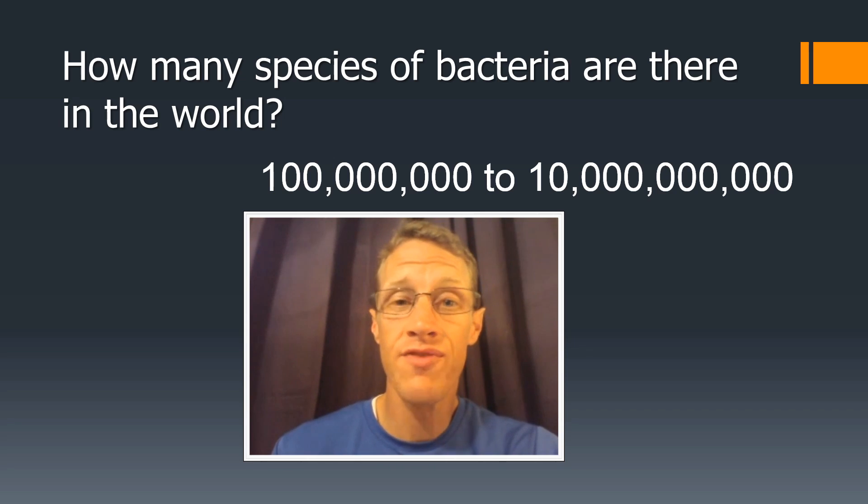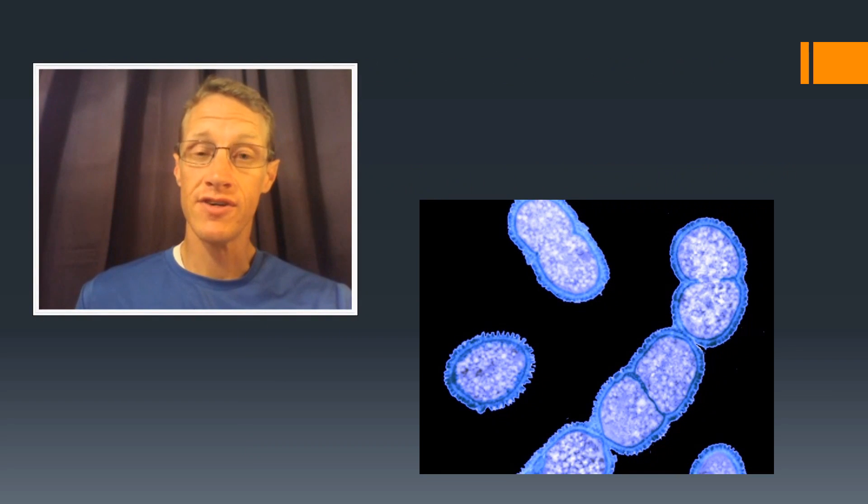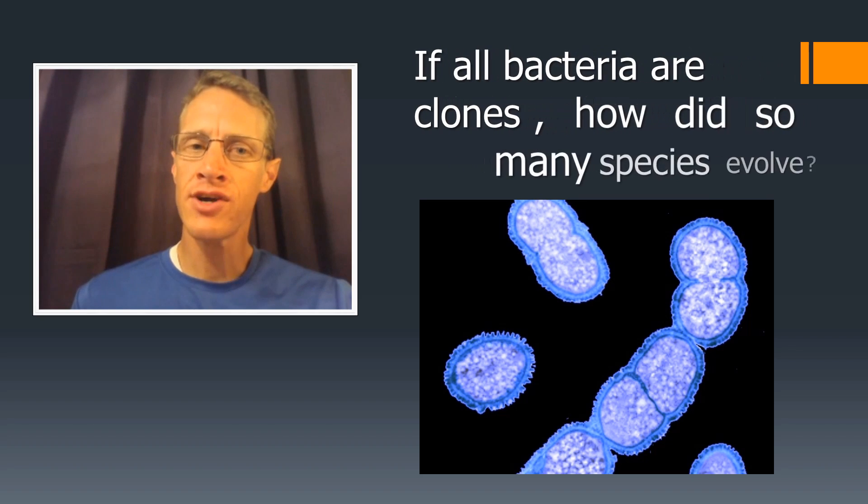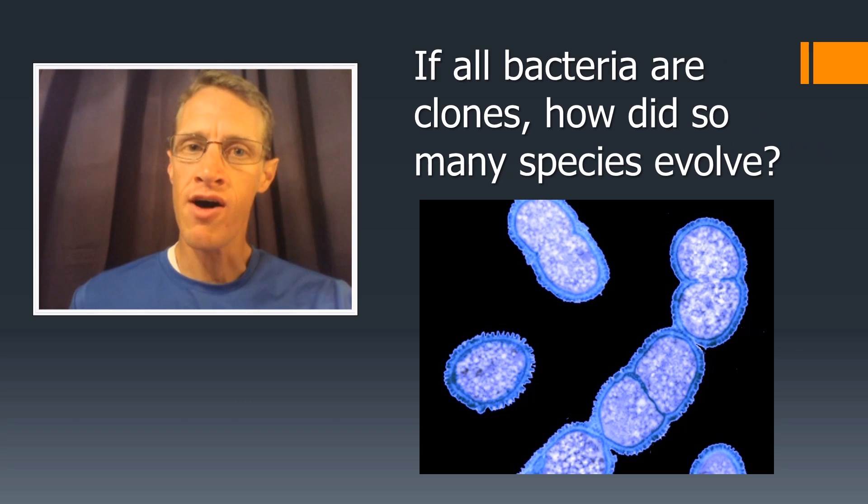Given also the fact that they are the most numerous forms of life, it's clear that bacteria dominate this world. But this huge amount of genetic diversity also leaves us with a puzzle. Because remember, all bacteria are clones. They're genetically identical to their parents. So the question is, if all bacteria are clones, how did so many species evolve?